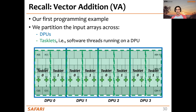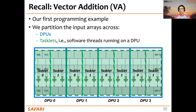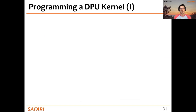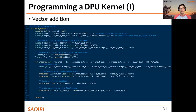Let's look at the DPU kernel for vector addition. We partition the input arrays equally and the output array equally across the available DPUs, and then inside each DPU we assign different chunks to the available tasklets. Let's take a look at how the DPU kernel for this vector addition looks.